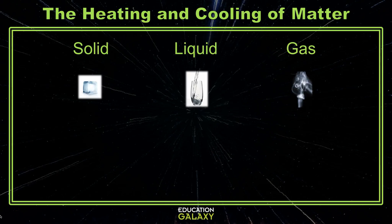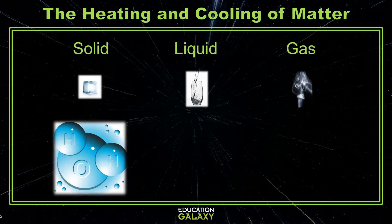Let's take a closer look at why changing the temperature of water will cause its state of matter to change. Water molecules are made up of an oxygen atom and two hydrogen atoms. We see one here under the block of ice. When the temperature of water is below zero degrees, the water molecules are still and stuck together. This means that when it's a solid, water will hold its shape, in this case a cube.